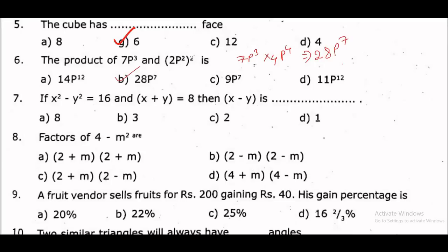Next: x² minus y² is equal to 16, x plus y = 8, find x minus y. So x² minus y² = (x+y)(x−y) = 16. With x plus y equal to 8, we get (x+y)(x−y) = 16.